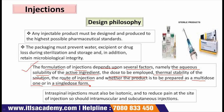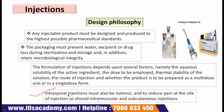Some types of injections must be made iso-osmotic with the bloodstream. This applies particularly to large volume intravenous infusions, as hypotonic solutions cause lysis of red blood corpuscles and must not be used for this purpose. Intraspinal injections must also be isotonic, and to reduce pain at the site of injection, so should intramuscular and subcutaneous injections.